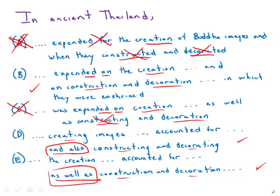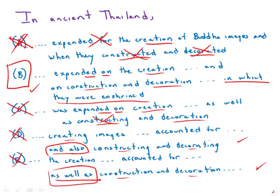Whereas in B, much of the local artisan's creative energy was expended on the creation of Buddha images and on the construction and decoration of temples. That's perfectly clear that the energy is being expended equally on all three tasks. Now it is true that B finishes with this awkward phrase 'in which they were enshrined,' and it would be a little clearer to say 'the temples that enshrined them.' In other words, B is not an ideal answer choice, but among the answer choices, it is by far the strongest — it is the best answer choice of these five.